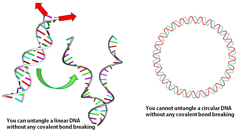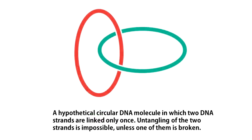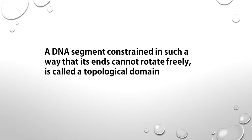But if you consider a circular DNA, the scenario is entirely different. Without breaking the phosphodiester bonds, you simply cannot completely separate the two strands. Remember, for all natural DNAs, this scenario is true — the rotation of their free ends is either restricted or completely forbidden. This means untangling the two strands of all biological DNA is topologically impossible. Let me show you a hypothetical circular DNA molecule. You cannot separate the two strands without breaking any one of them. A DNA segment constrained in such a way that its ends cannot rotate freely is called a topological domain.